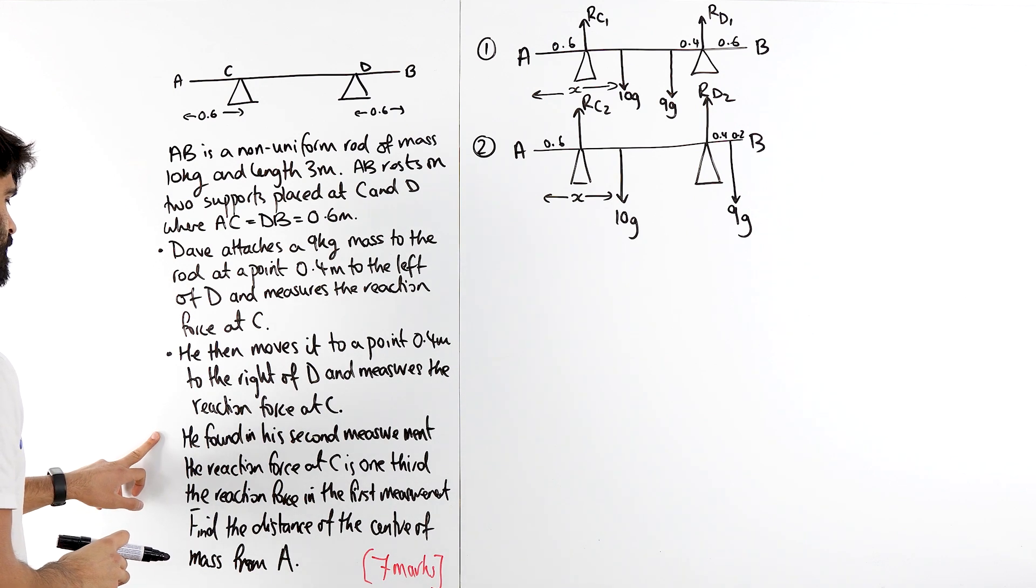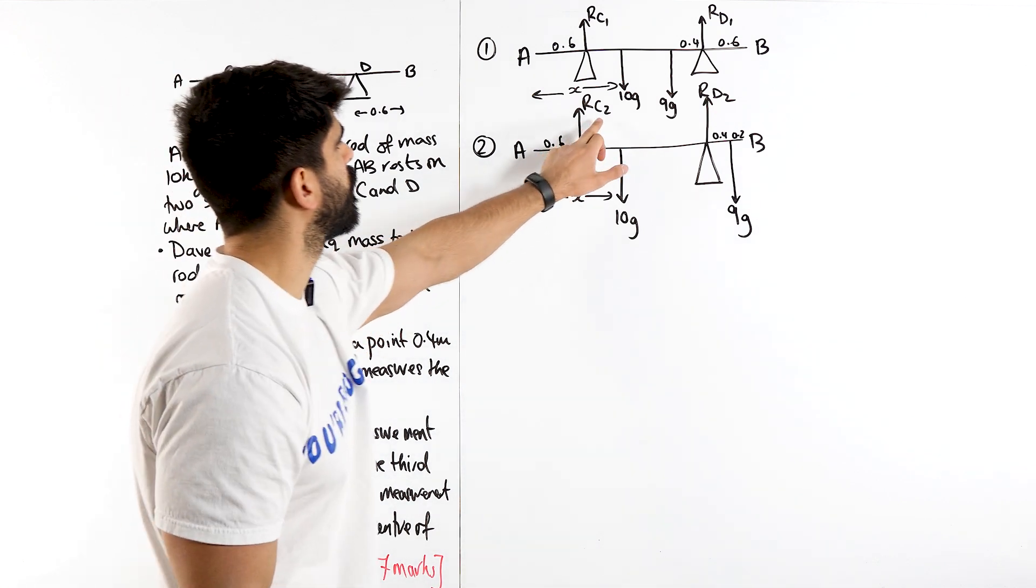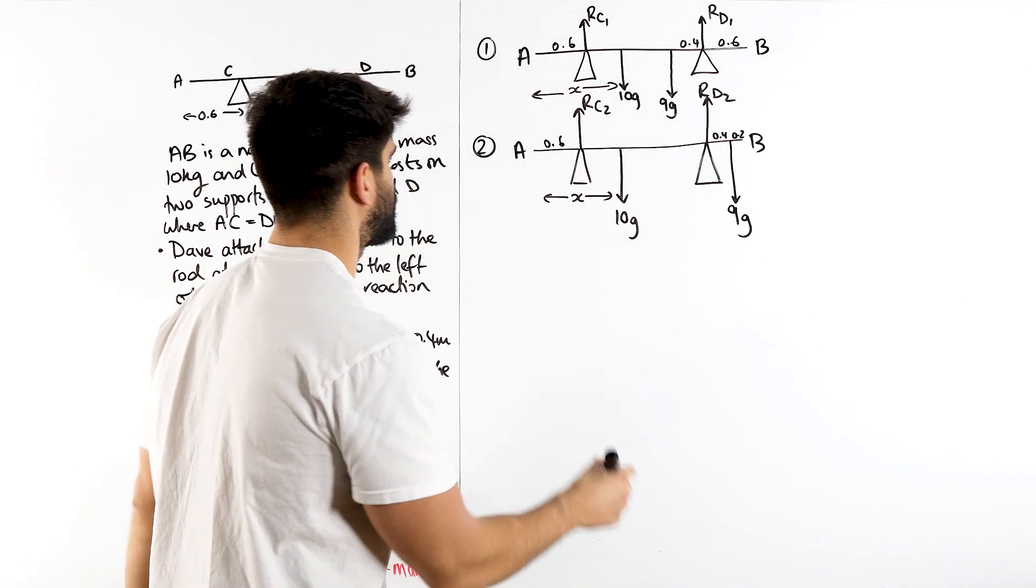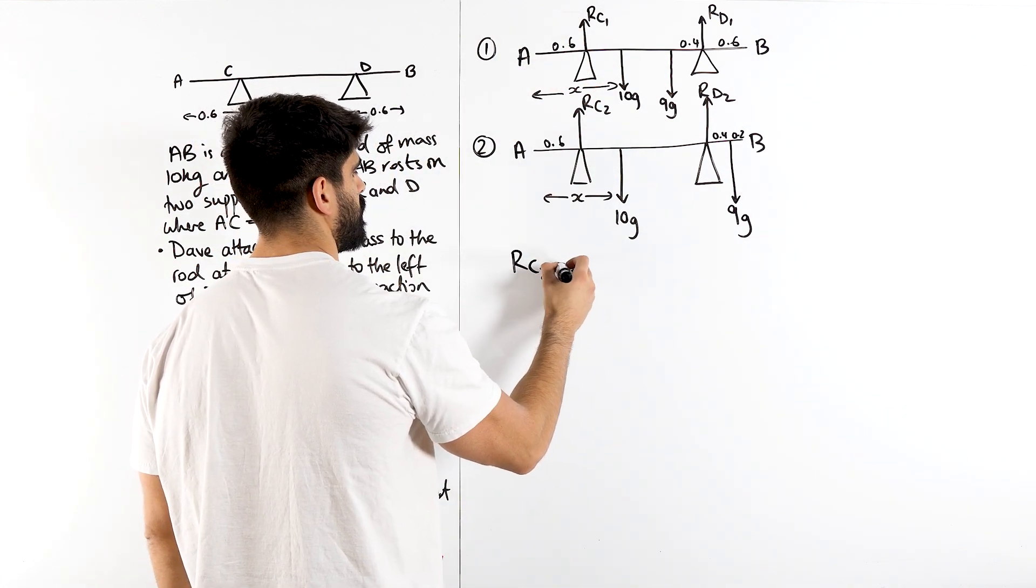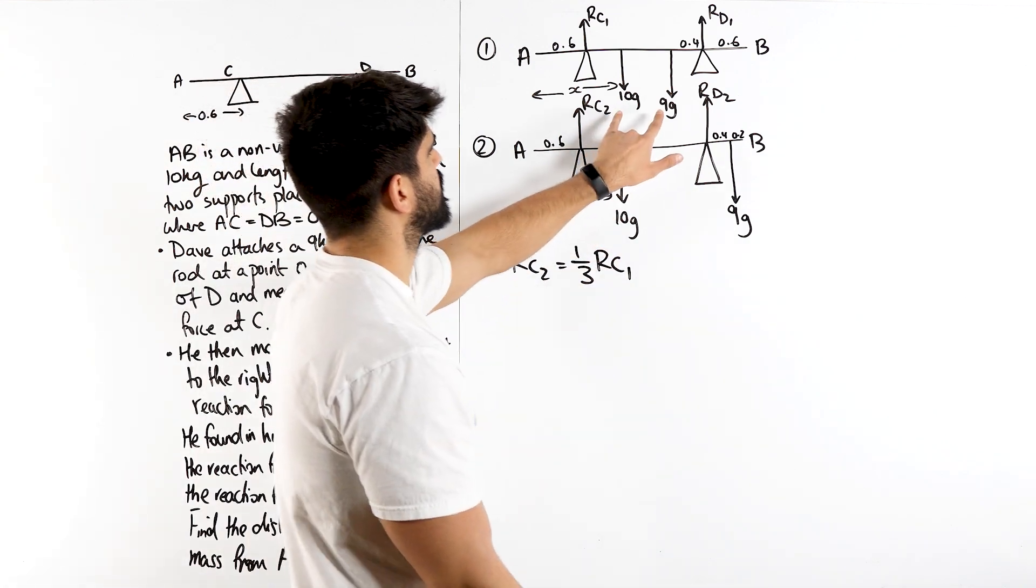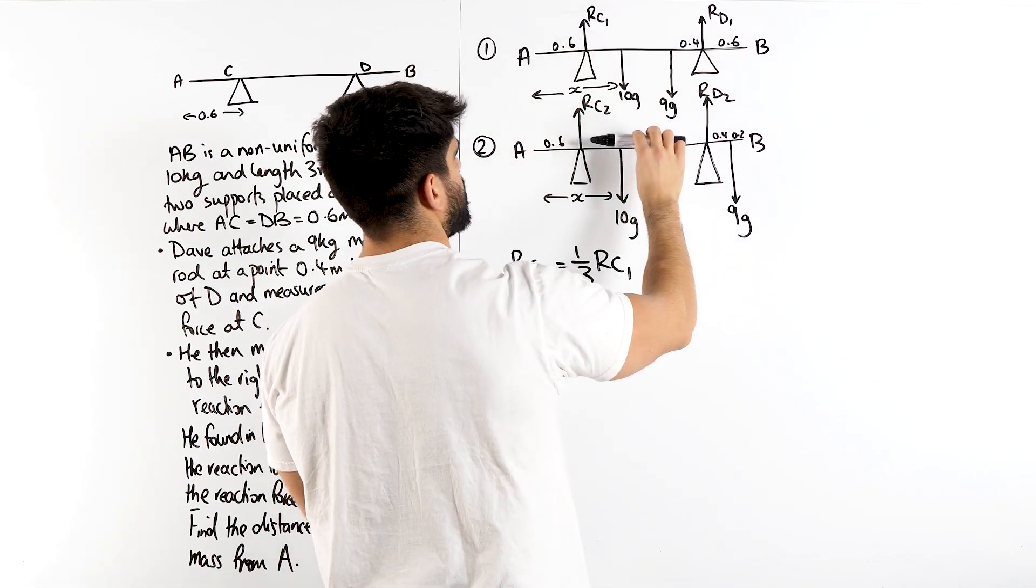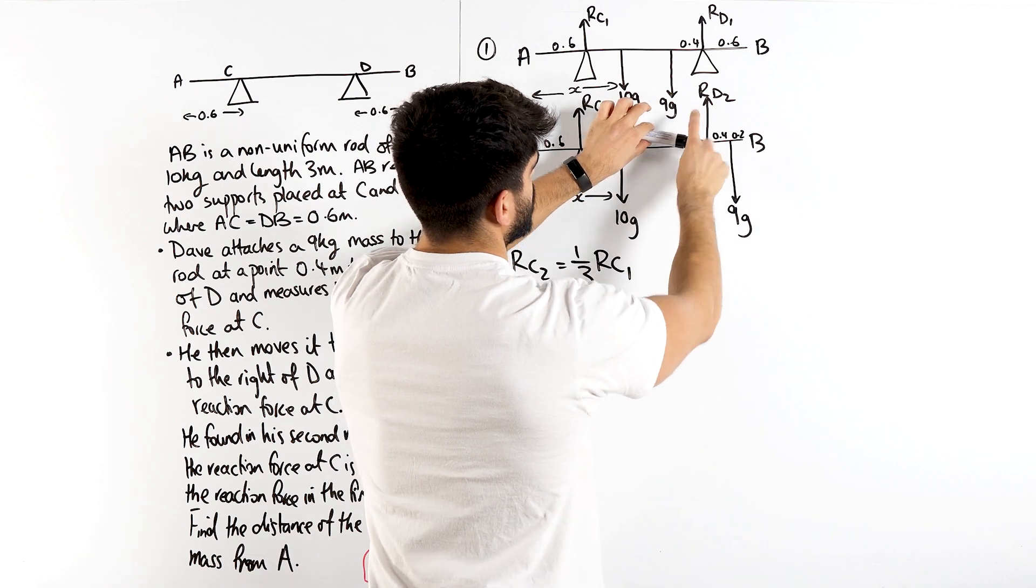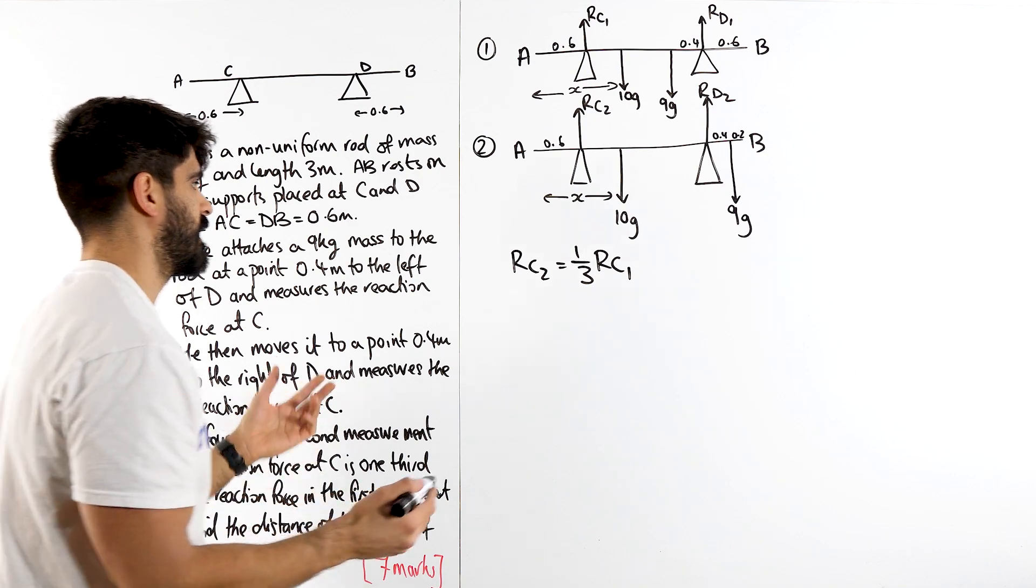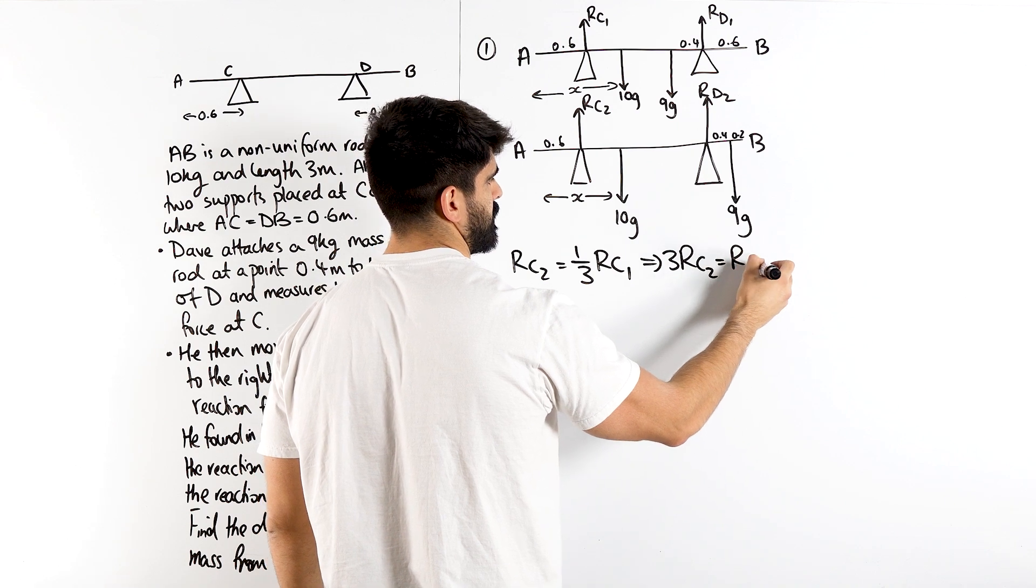They did say he found in his second measurement that the reaction force at C is one-third the reaction force in his first measurement. So this one is a third of this. So RC2 is one-third of RC1. And it kind of makes sense. Over here you can see both of these forces pushing down together, that reaction force is going to be much bigger than here. If we move that force over, it's going to want to tilt eventually. So the contact force is going to be much less. I don't really like dealing with thirds, so let's say 3 lots of RC2 is RC1.